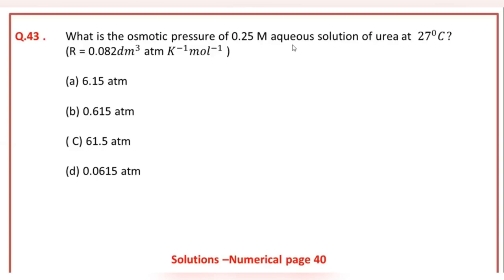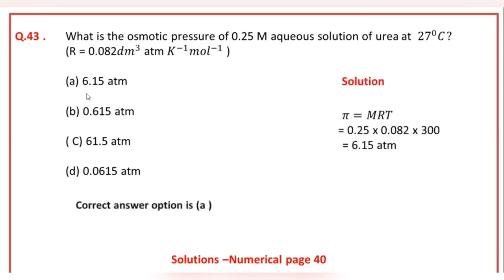What is the osmotic pressure of a 0.25 millimolar aqueous solution of urea at 27°C? The value of gas constant R is given. The correct answer option of this question is A.